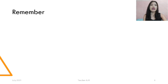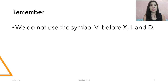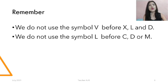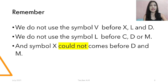We do not use the symbol V before X, L, or D — there is no VX, VL, or VD. We do not use the symbol L before C, D, or M — there is no LC, LD, or LM. And the symbol X cannot come before D or M — there is no XD or XM.